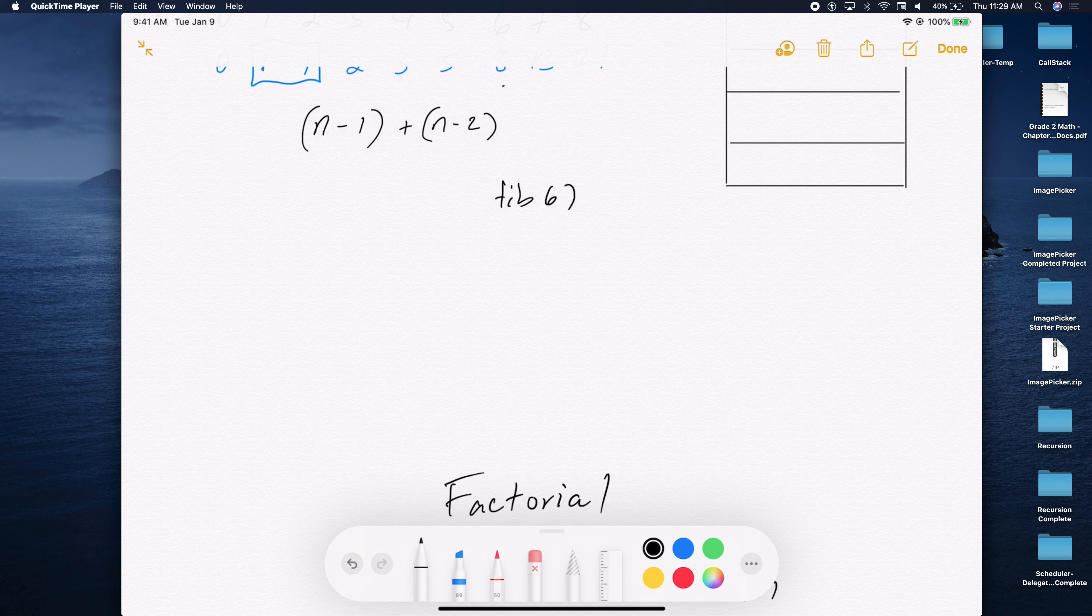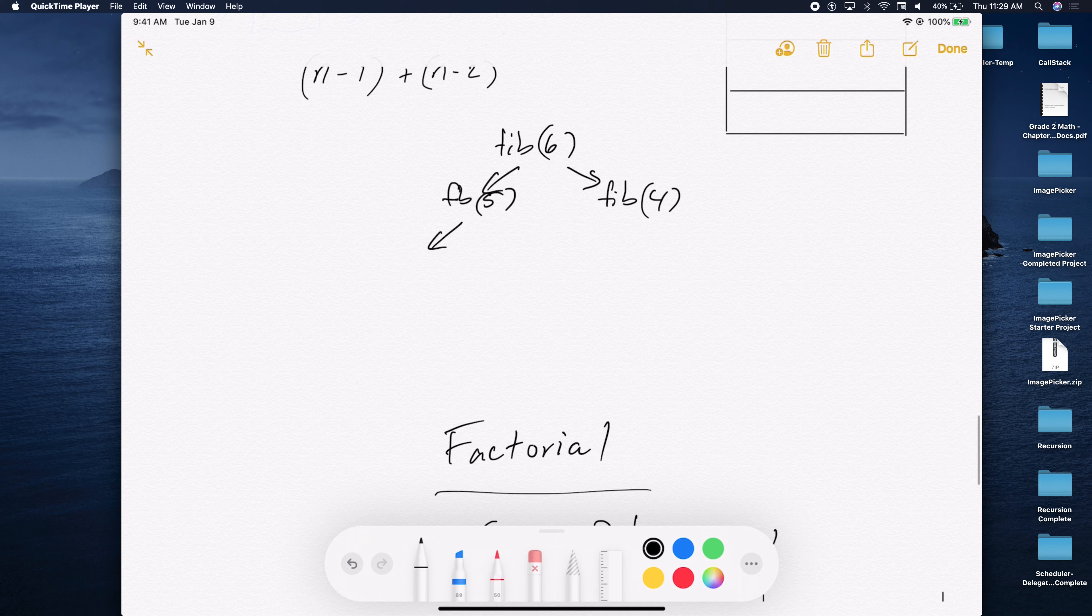Okay, so fib of 6. What does fib of 6 call? Fib of 5. And fib of? I heard 3 and 4. Okay. Alright. What does 5 call? Like, stop us, because that's one of the things. Once we start going that train, recursion is everywhere in data structures. And understanding what it does is important to trace back where you want to go. So let's start again.